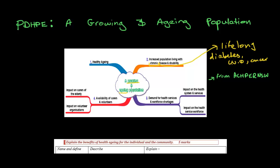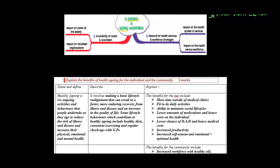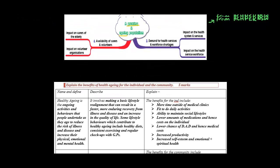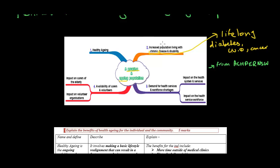Lastly, you have the availability of carers and volunteers, which impacts on the carers of the elderly and volunteer organizations. So these three things are the challenges associated with the growing and aging population, while healthy aging is a separate process which can help aid the growing and aging populations of Australia.